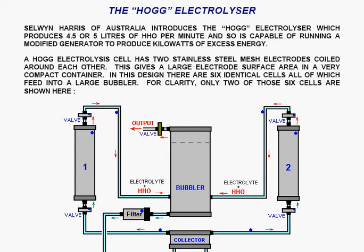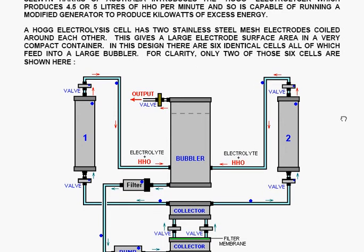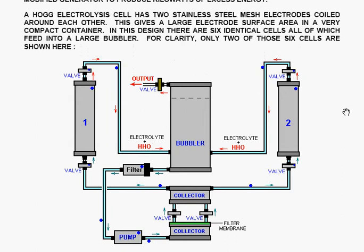A HOG electrolyzer cell has got two stainless steel mesh electrodes coiled around each other. This gives a large electrode surface area in a very compact container.